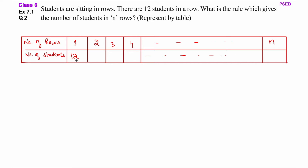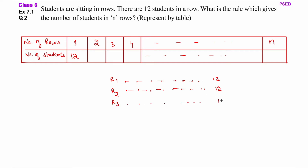1 row mein to 12 students baithenge. 2 rows mein kitne students baithenge? Dekho — row 1 mein 12 students hai. Row 2 mein bhi 12 hi students honge, kyunki each row mein 12 students baithenge. Isi tarah se third row mein bhi 12 students honge. R4 — fourth row mein bhi 12 students honge.